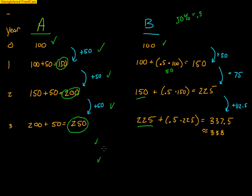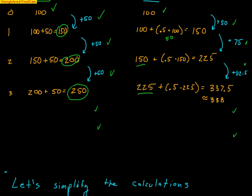If I were to continue this, I'd continue to go up 50 every single year. Whereas B's amount that they're increasing by changes: it goes up 50, then 75, then 112.5, then even more — because we're increasing by a percentage every time. The difference between a linear and an exponential function is that linear increases by the same amount, whereas exponential increases by an increasing amount.